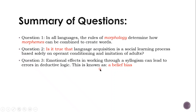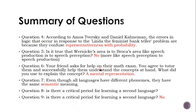Emotional effects in working through a syllogism can lead to errors in deductive logic — this is known as belief bias. Question four, according to Amos Tversky and Daniel Kahneman, was essentially about heuristics — how we use mental shortcuts and rules of thumb, which can be detrimental when they get in the way of our reasoning. We think, okay, she's had all this extensive learning, she must also be a feminist as well as a bank teller — there's your representative heuristic in action.